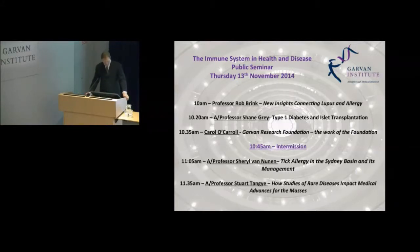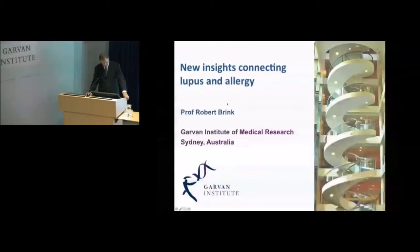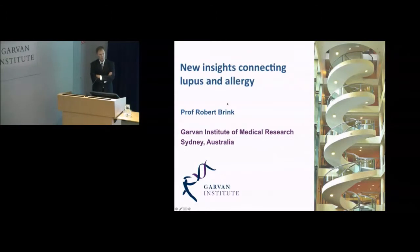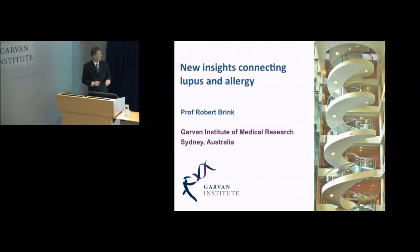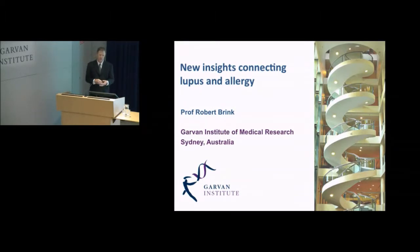Without any further ado, I will kick off proceedings. What I wanted to talk to you about today stems from some of the work we've been doing in the lab. My interest is in a set of cells called B cells, which make the antibodies that protect us from infection, and really are what we want to get when we have a vaccination to protect us from reinfection.